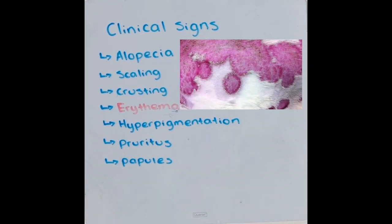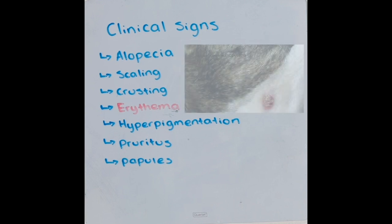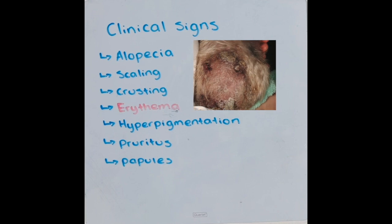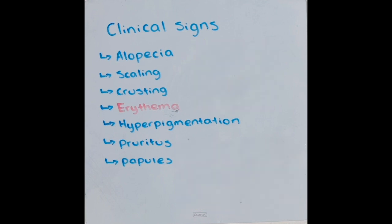The skin increases the production of keratinocytes in response to fungi, resulting in thickened, scaly skin. The fungi also produces metabolites that initiate an inflammatory response, which causes a lesion to be erythematous.